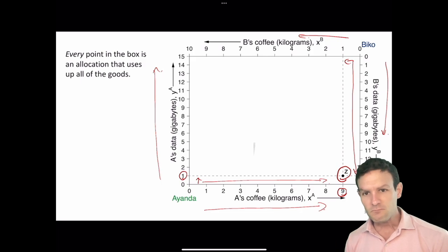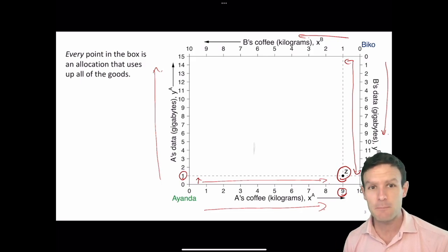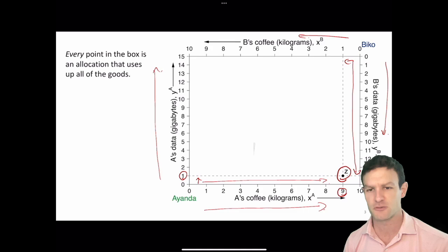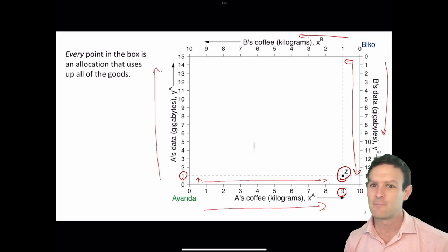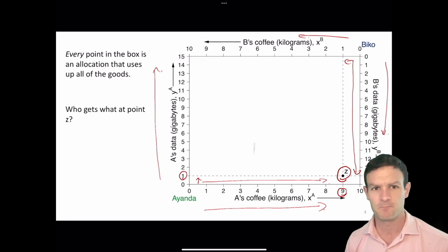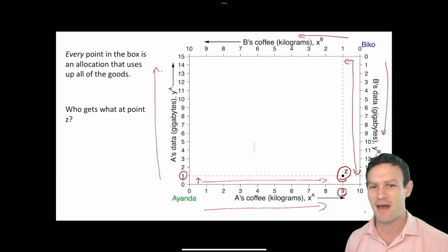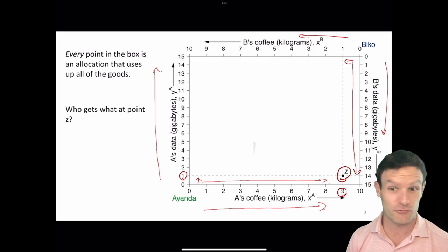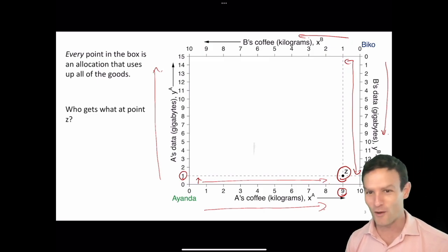As a reminder: every point in the box is an allocation that uses up all of the goods. They have to sum to all of the possible numbers they could get, so x bar and y bar are exhausted at any point in the box. At point z, Ayanda gets nine units of coffee and one unit of data, and Bicor gets 14 units of data and one unit of coffee.